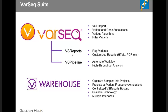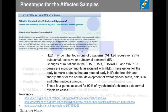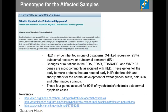The sample data we're looking at is a custom family simulated using 1000 Genomes Vietnamese-related samples. We pulled a trio — father, mother, and affected child — and then grabbed two additional related sibling samples. Two of the daughters are the affected samples and we have one unaffected son. We downloaded the BAM files from 1000 Genomes and used GATK for variant calling. Our phenotype of interest is hypohidrotic ectodermal dysplasia, or HED — a rare genetic condition characterized by reduced ability to sweat, missing teeth, and fine sparse hair.